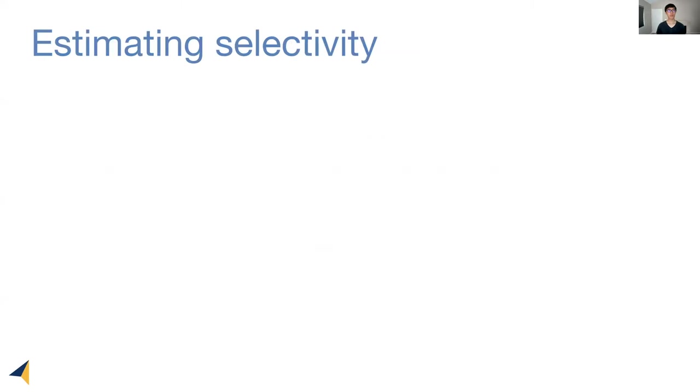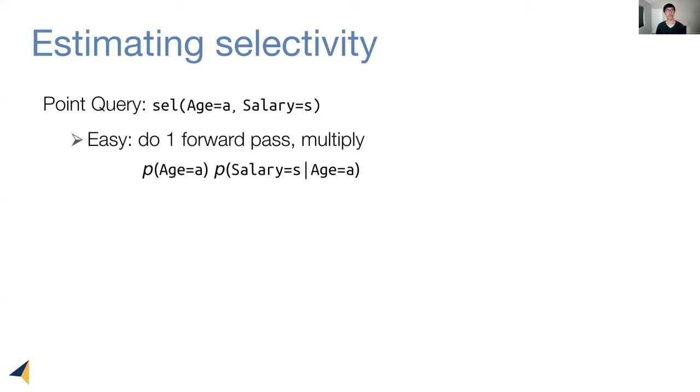After training, we use the model to estimate selectivities. The basic case is a point query, where we want to return the selectivity of a point, fully specifying all columns. This is actually an easy task. We can simply perform a forward pass on the specified point, A and S, and multiply the outputs correspondingly.